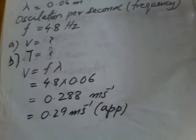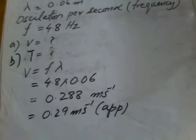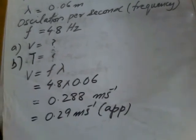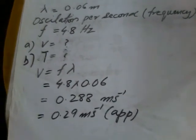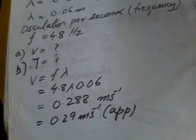When we multiply both of them, we get 0.288 meters per second. But we can write it 0.29 meters per second approximately.